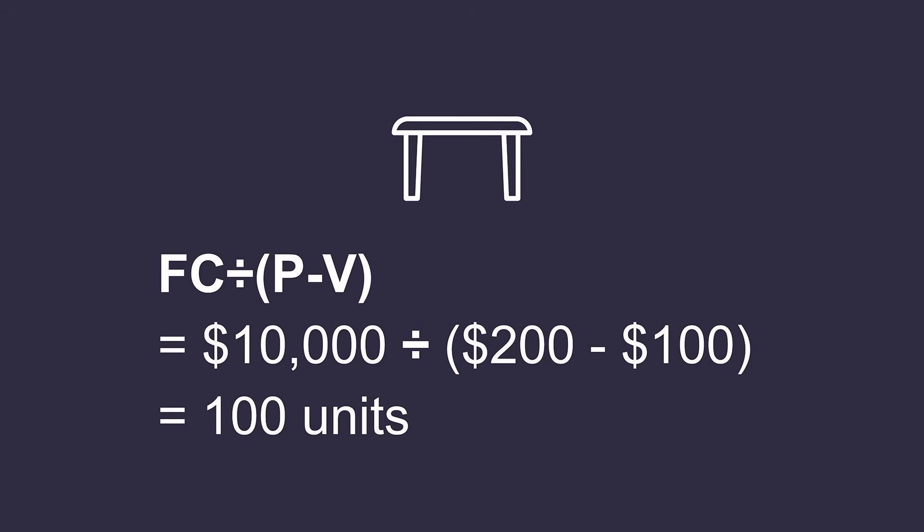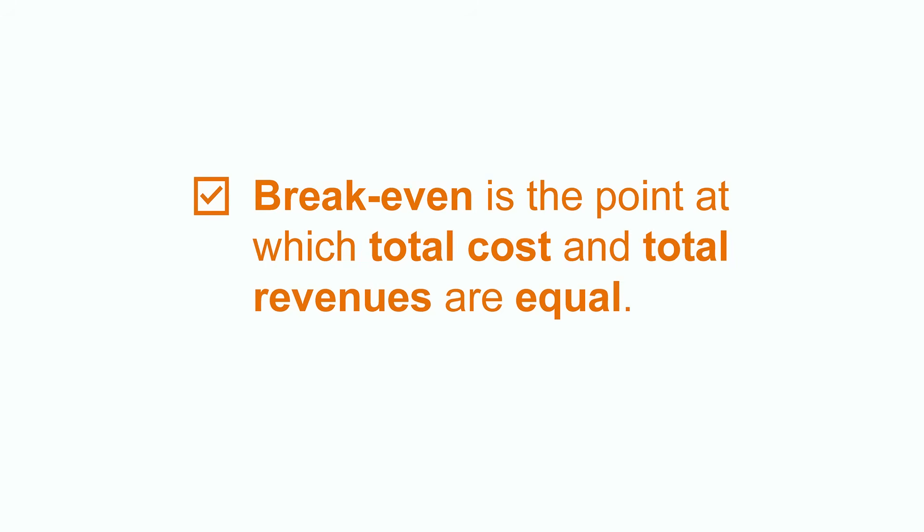The formula is simple: fixed cost divided by price minus variable cost. You plug in the figures, which is $10,000 divided by $100, that is 100 tables. You will have to sell 100 tables just to breakeven. Every additional table you sell, you will be making a profit. The basic concept of breakeven analysis is the point at which total cost and total revenues are equal.